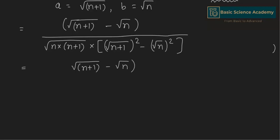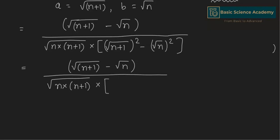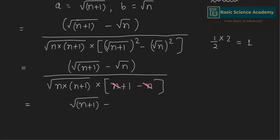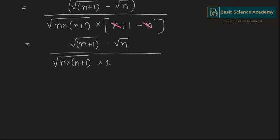Applying the identity (a + b)(a − b) = a² − b², the denominator simplifies: square root of n plus 1 squared gives n plus 1, and square root n squared gives n, so n plus 1 minus n equals 1. This gives us square root of n plus 1 minus square root n, divided by square root of n times n plus 1.